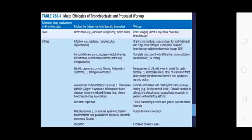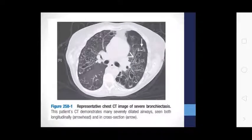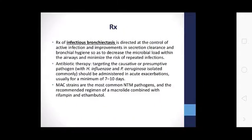Major etiologies of bronchiectasis and their workup are categorized by pattern of lung involvement and etiology. Treatment of infectious bronchiectasis is directed at controlling active infection, improving secretion clearance, and bronchial hygiene, so as to decrease microbial load in the airway and minimize the risk of repeated infection.